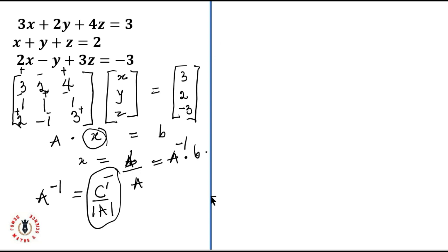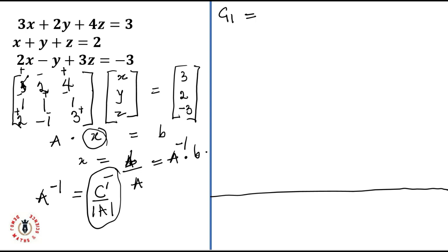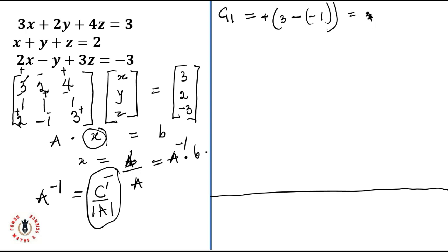For my work area, C11 is the cofactor for the first row, first column element. I pick elements not in that row or column: one, one, minus one, and three. C11 is positive, so it's the determinant of that 2×2 minor: three times one equals three, minus minus one equals plus one, so C11 equals four.